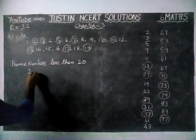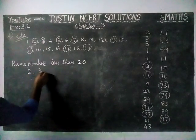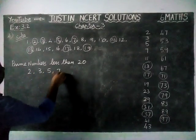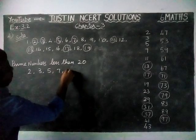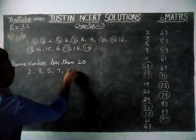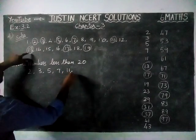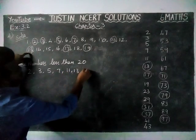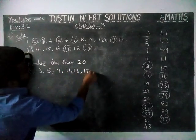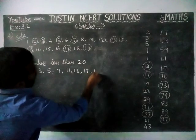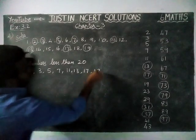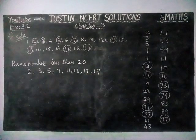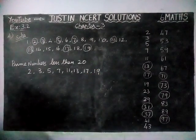So, the prime numbers less than 20 are: 2, 3, 5, 7, 11, 13, 17, and 19. These are all the prime numbers less than 20.